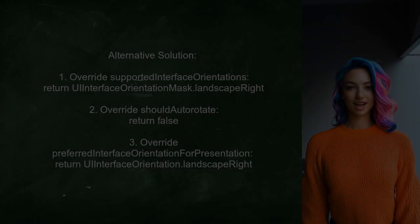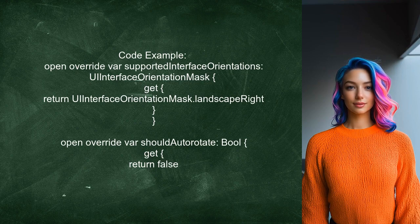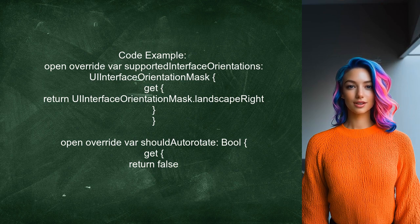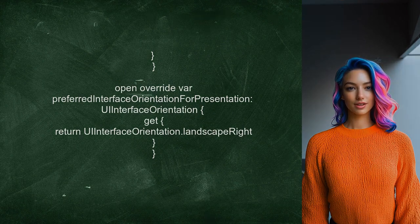An alternative solution provided by another user involves overriding specific properties in your view controller. They suggest setting the supported interface orientations to Landscape Right, disabling autorotation, and specifying the preferred interface orientation for presentation as Landscape Right.